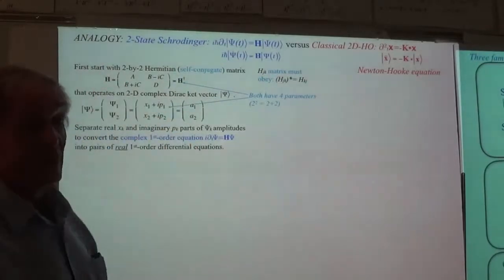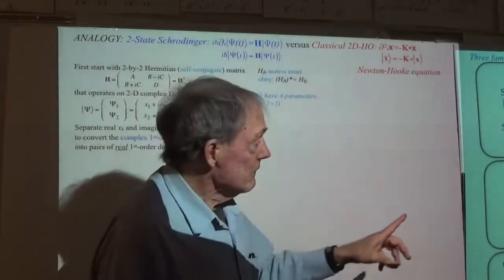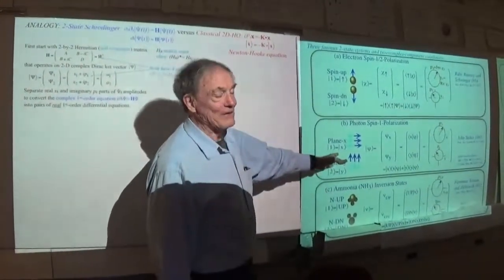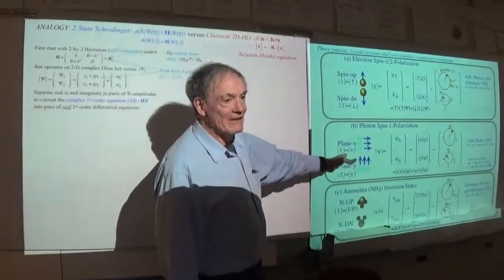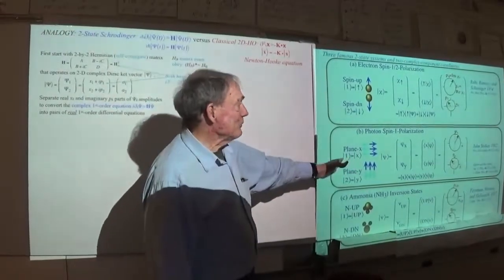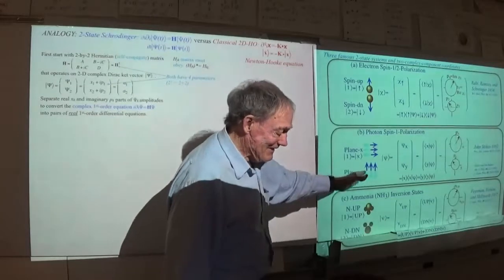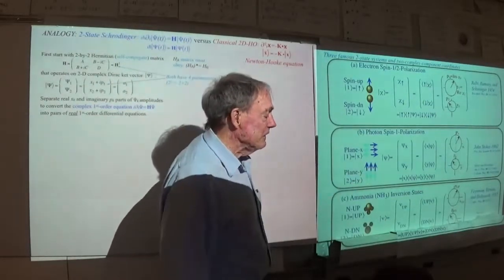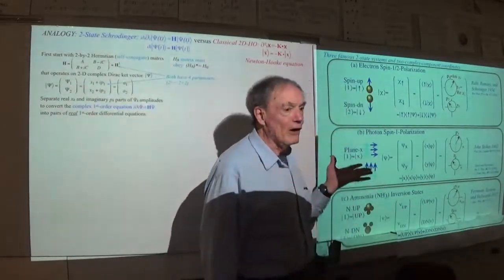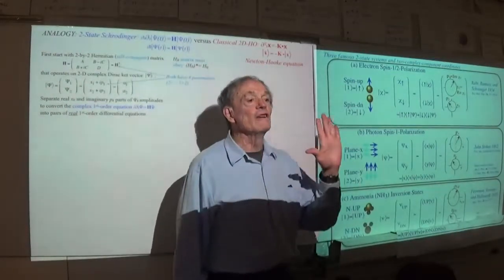Student: We know the photon is a spin-one particle — it has three states of polarization. When we do the analysis, we only take into account two states. What happens to the third state? Instructor: The third state gets crushed by the fact that there's no charge and it's divergence-free, so it has to be a transverse wave. This is a plane wave, and we're looking at it head-on.